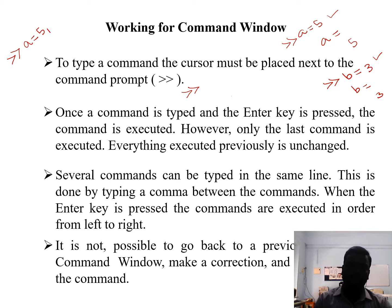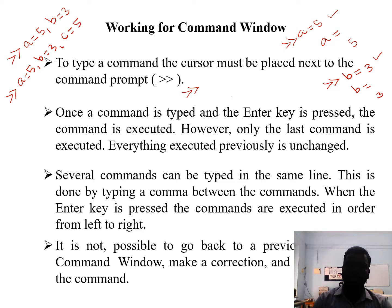Each variable is separated by a comma. If you use more than two variables in a single line — for example, a = 5, b = 3, c = 5 — and press Enter, the values of a, b, and c are displayed one by one.